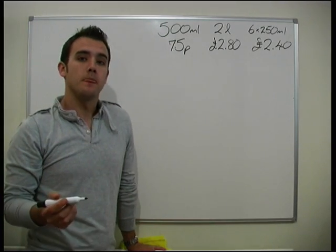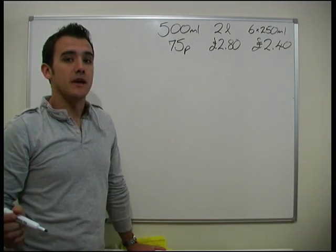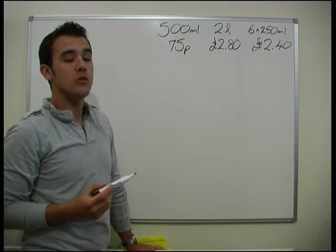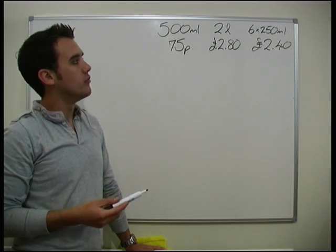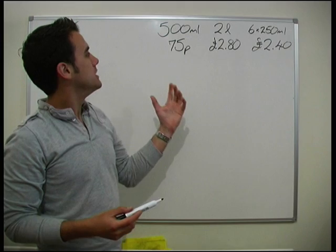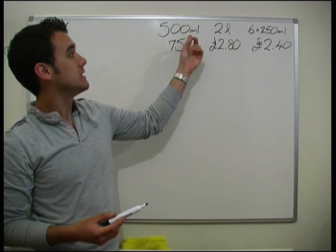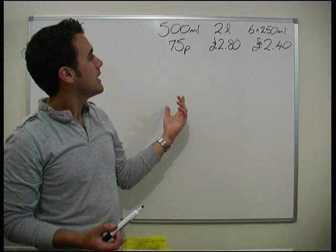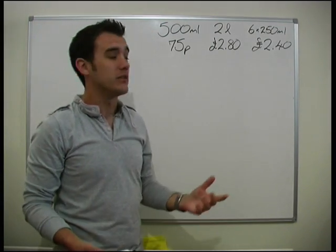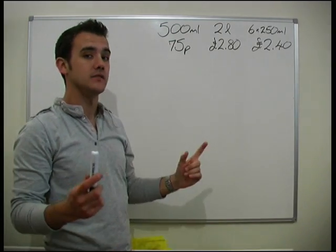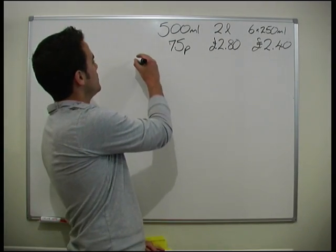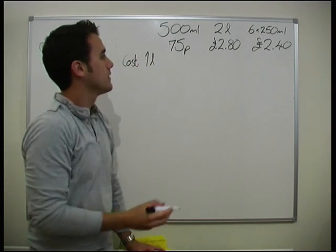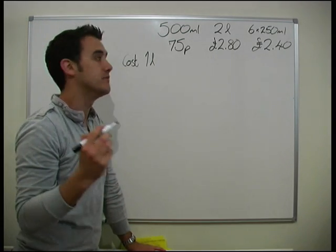So now we need to work out which one is actually the better value, and the way we do that is we compare like for like. We find out, we look at and try and work out a value that we can work out all of them for, which will be the easiest. So what's going to be the easiest here? We could get everything down to 500ml but it's going to be a little bit of a pain. We could get everything up to 2L but again that's a bit of a hassle. It's probably best if we look at 1L and compare everything, the cost of 1L. So we need the cost of 1L. That's what we're going to work out and then we can see which one actually is better value.